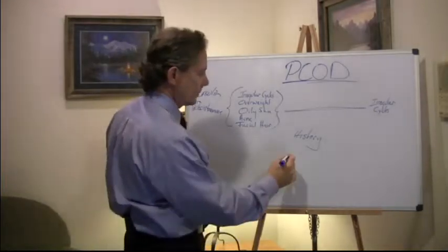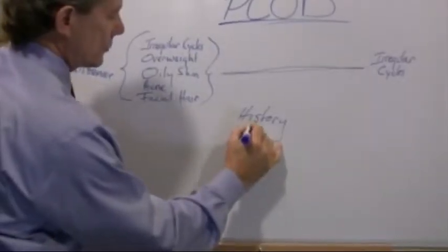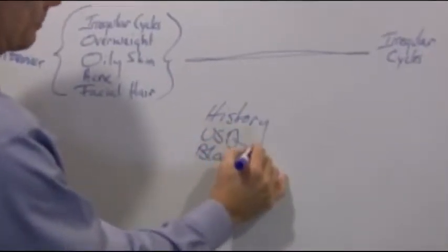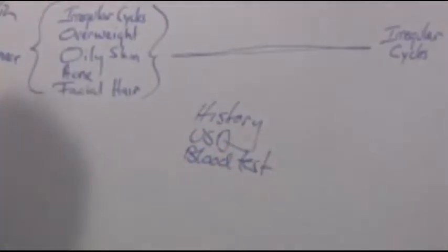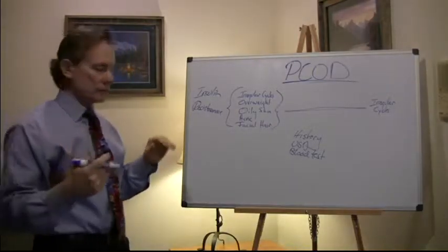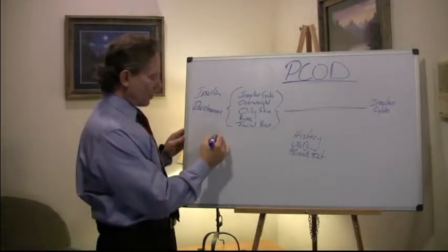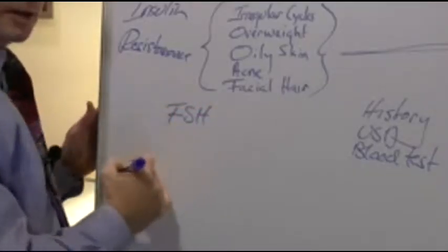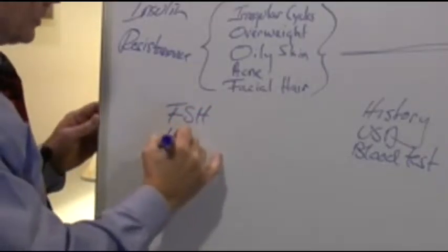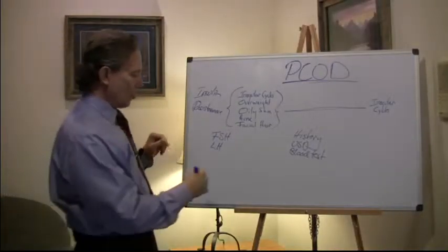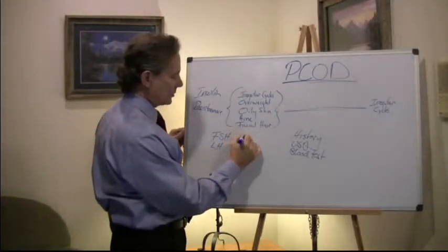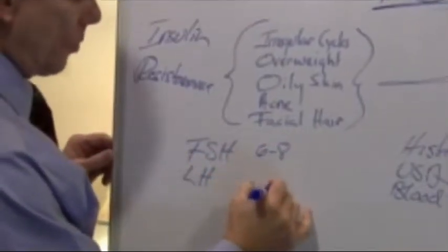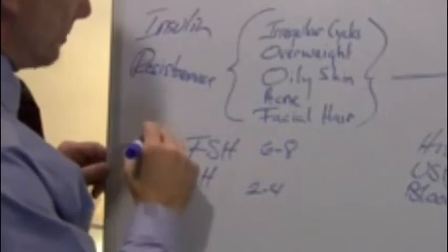The other thing we can do is an ultrasound and some blood tests. Let's talk about the blood test. There's simple tests to do. We check a hormone called follicle stimulating hormone, FSH, and the other hormone is called luteinizing hormone. So in a normal lady, a normal range is going to be 6 to 8 for the FSH, and it's going to be 2 to 4.